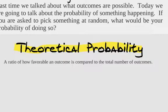Well, theoretical probability, this is the basic definition that you're going to need to know. It's a ratio of how favorable an outcome is compared to the total number of outcomes. It's a ratio, so it's going to be written as a fraction typically, and it's going to be compared to what actually happens or what you want to happen, the favorable, versus the total number of outcomes that could happen.